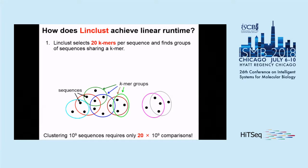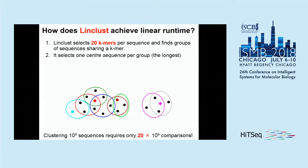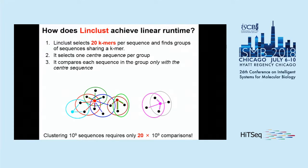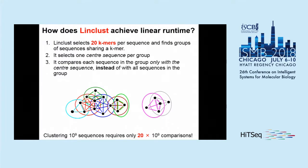This is LinClust. In the plot, the black dots are sequences. For each sequence, we extract the 20 k-mers with the lowest hash value, then sort them and define k-mer groups — for example, represented by a green circle. For each k-mer group, we select the longest sequence as the representative, then compare all members of the k-mer group to that center sequence. This is the trick that makes it linear: instead of an exhaustive all-against-all search, you only compare members to the center.